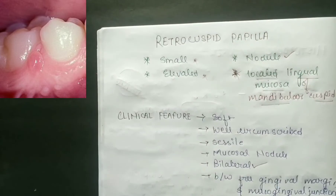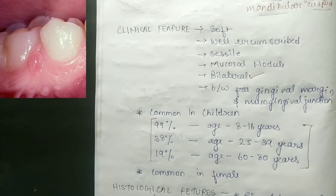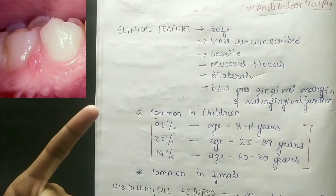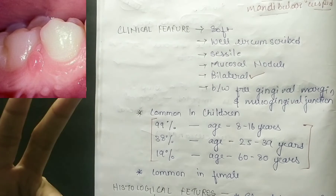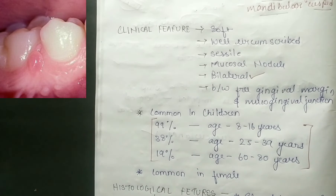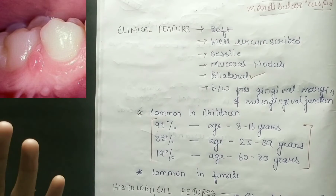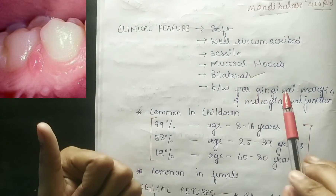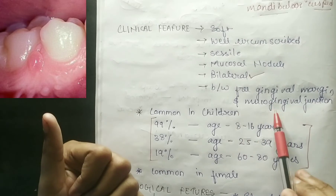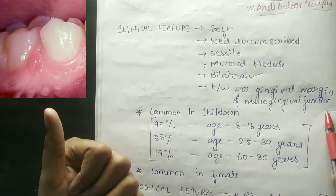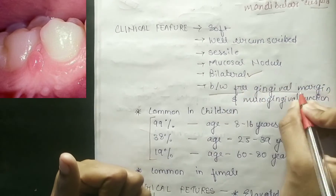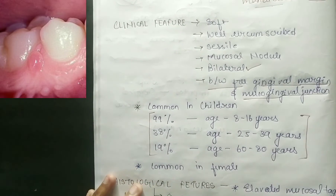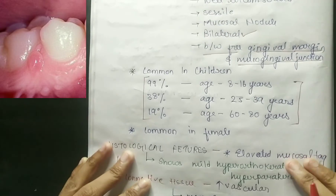Talking about the clinical features of retrocuspid papilla: they are soft, well-circumscribed mucosal nodules. They are bilateral and are found between the free gingival margin and the mucogingival junction.